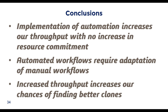In conclusion, automation increases throughput without increased resources once methods are adapted and optimized. Increased throughput allows more clones to be produced or more candidate molecules to be pursued, potentially allowing cell line development to begin earlier in CMC development. Automated workflows require adaptation of manual workflows, occasionally with significant time input, and may be counterintuitive to manual approaches. Increased throughput increases our chances of finding better clones — since we can produce and process more clones and potentially use improved evaluation techniques. As the saying goes: looking through more hay gives us a better chance of finding the needle.